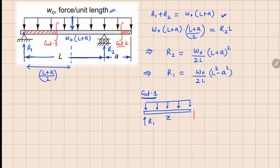Since we have a positive face opening up, we mark these as V1 and M_V1. We replace the uniformly distributed force with a point force w₀x, and the distances from both sides to the centroid are x/2 and x/2.